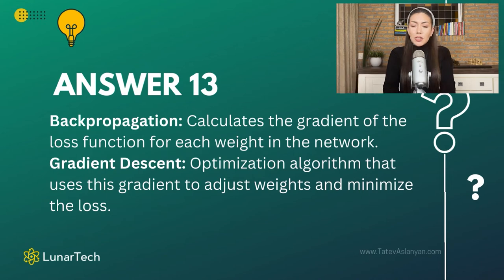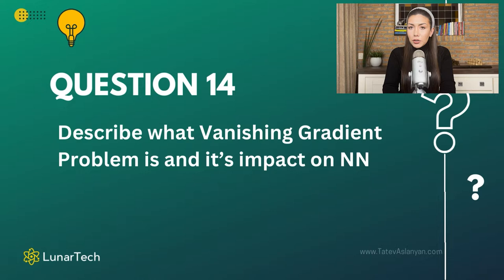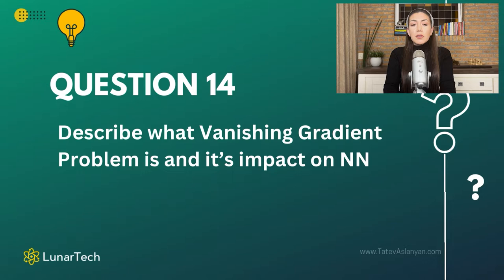The next question is: describe what the vanishing gradient problem is and its impact on neural networks. Vanishing gradients happen when the gradients of a network — the loss function with respect to model parameters such as weights and bias parameters — become very small, and in some cases become entirely close to zero, meaning they start to vanish as they propagate back through very deep layers to the earlier layers.